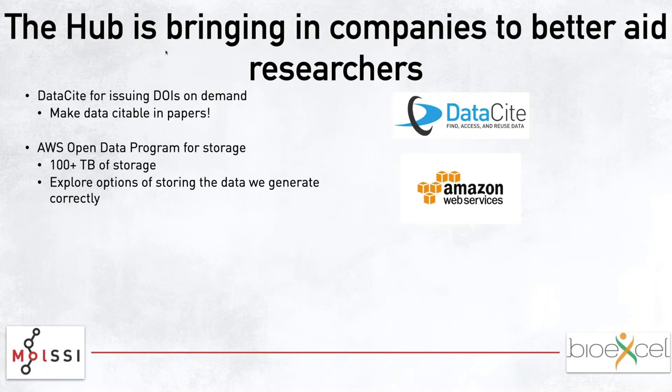As part of the longer-term goals with Amazon, we want to look at options for how we store data in the computational molecular sciences field more generally — so we don't run into the constant problem where you read a paper, someone has generated fantastic data, but the best you can do is contact the author and hope they still have it in a packageable way, and hope they don't have to physically mail you a flash drive. That's a longer-term goal we're hoping to accomplish with the lessons learned from the hub.